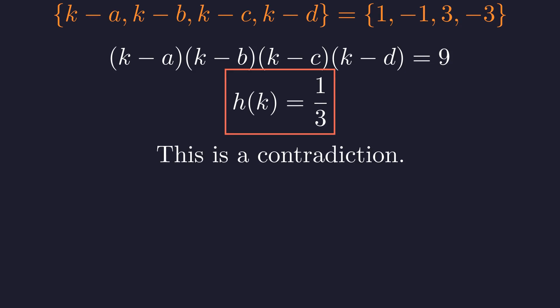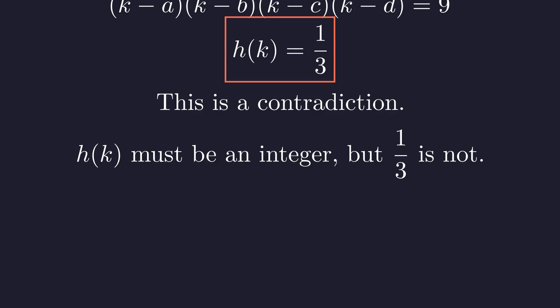But this is impossible. Remember, we proved that h of k has to be an integer whenever k is an integer. But 1 third is definitely not an integer.